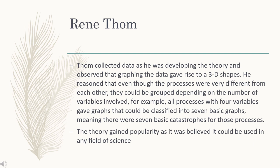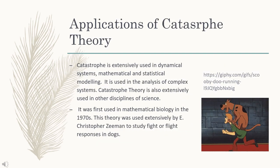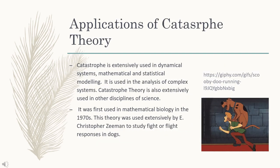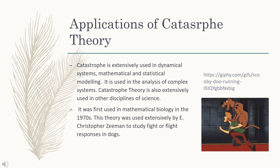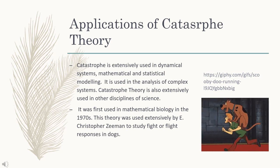The theory then gained popularity as it was believed it could be used in any field of science. Catastrophe theory is extensively used in dynamical systems, mathematical and statistical modelling.